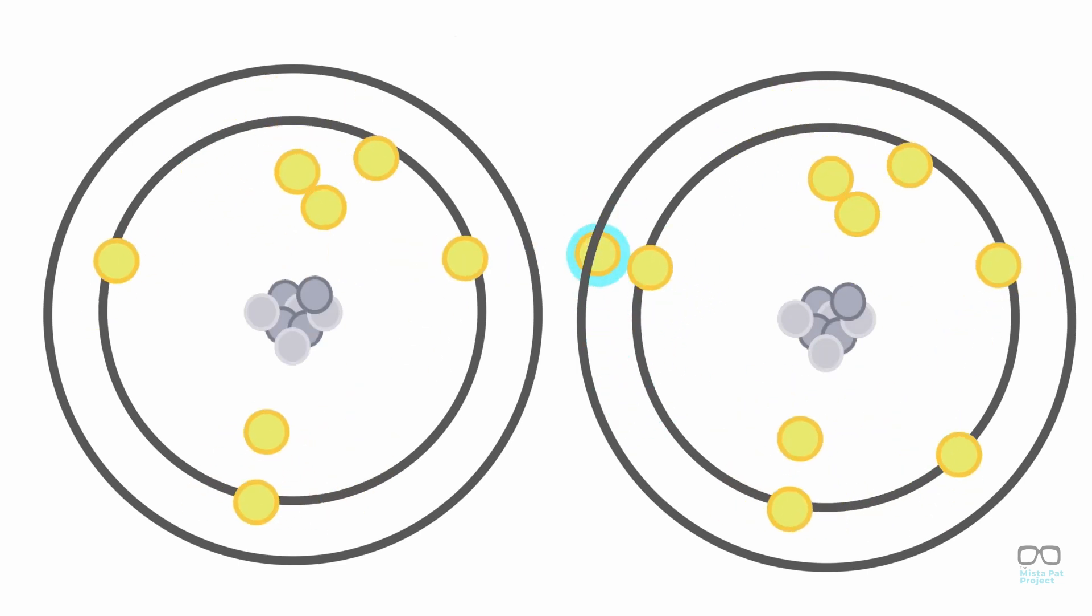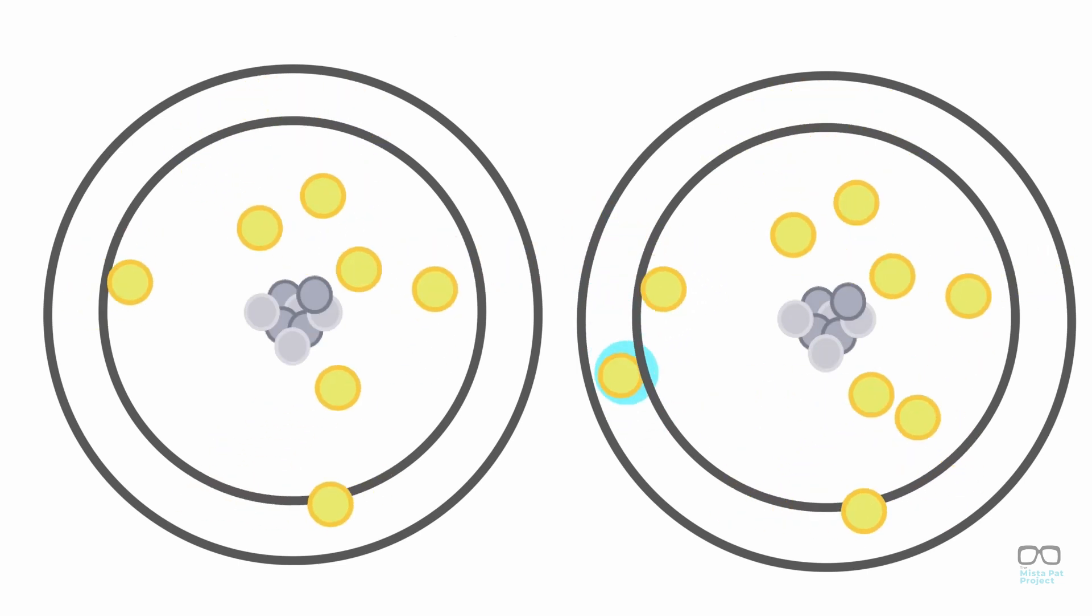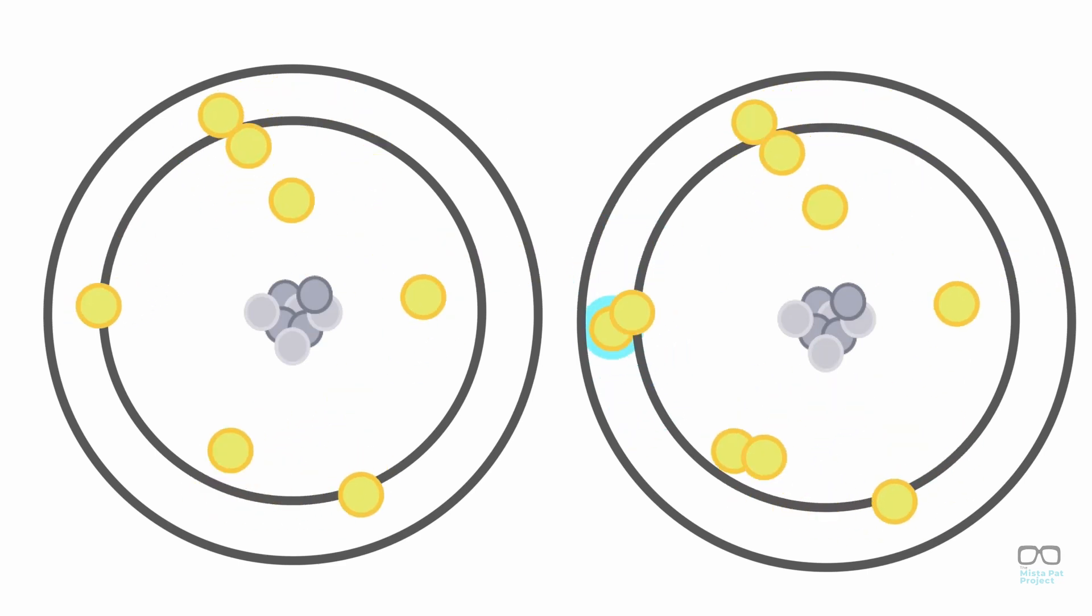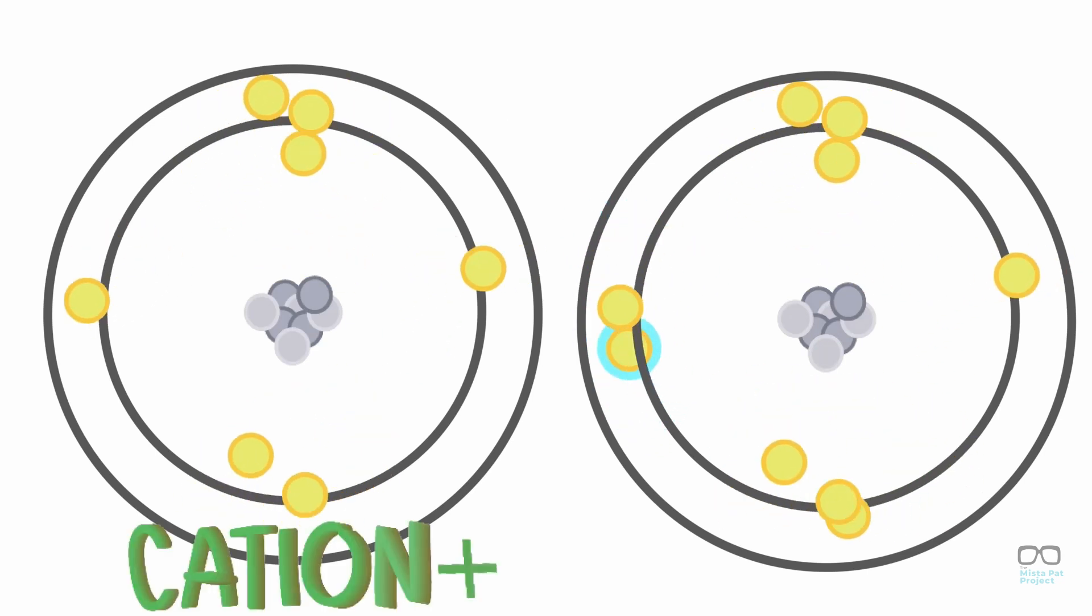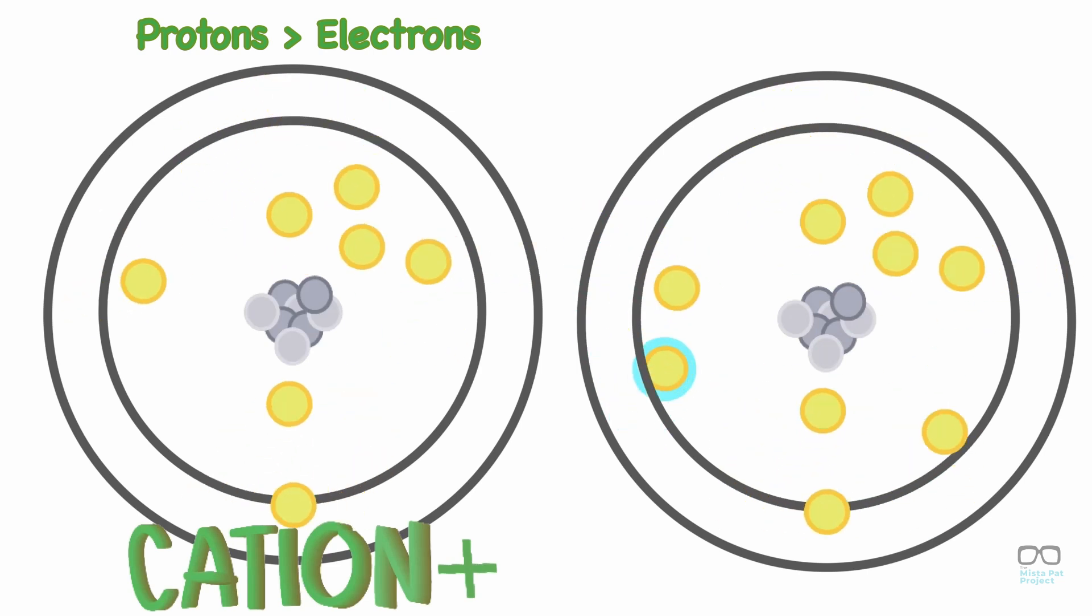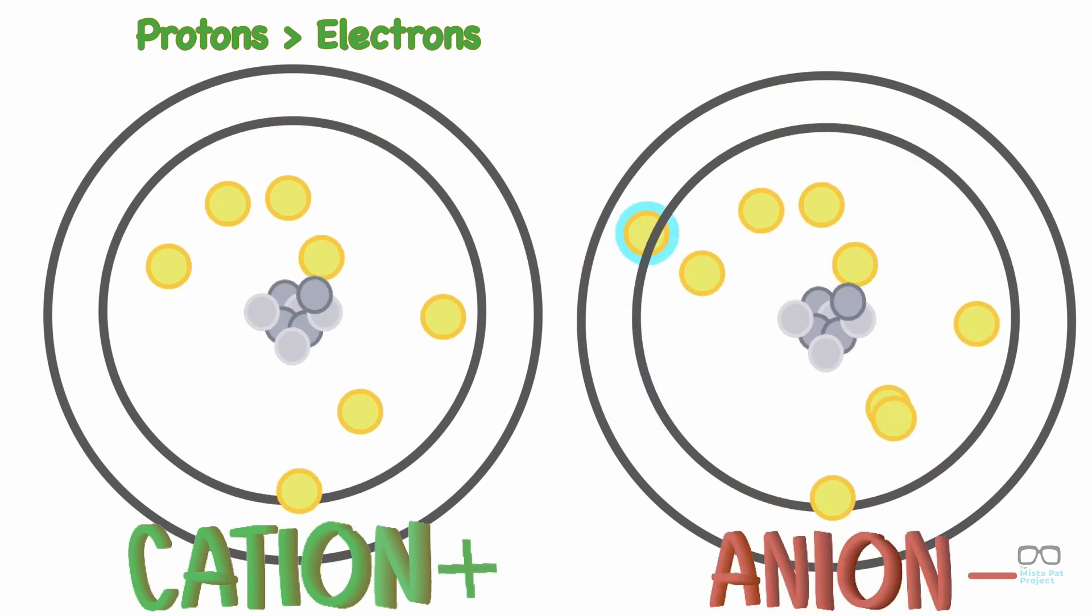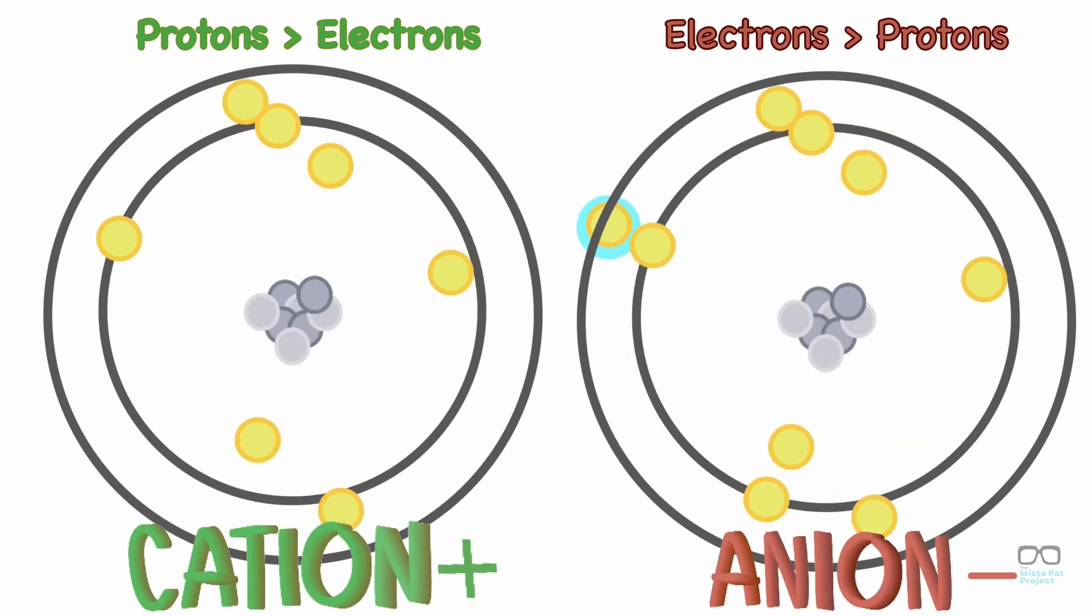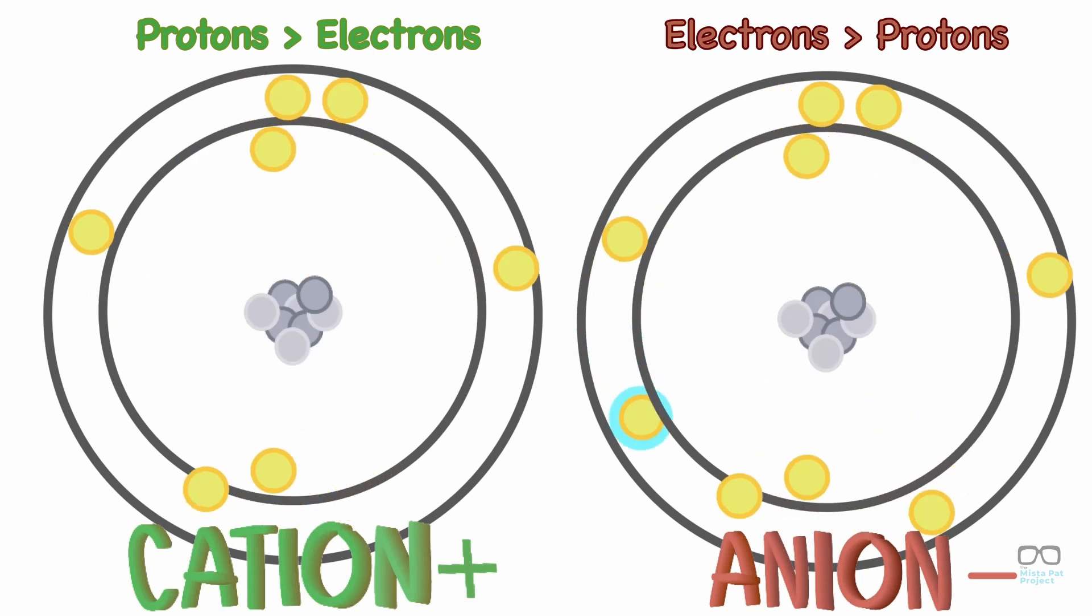When this happens, the charge of the atom changes and it becomes an ion. There are two types of ion. A cation, which is an atom with more protons than electrons, making it a positively charged atom. And an anion, which is an atom with more electrons than protons, making it a negatively charged atom.